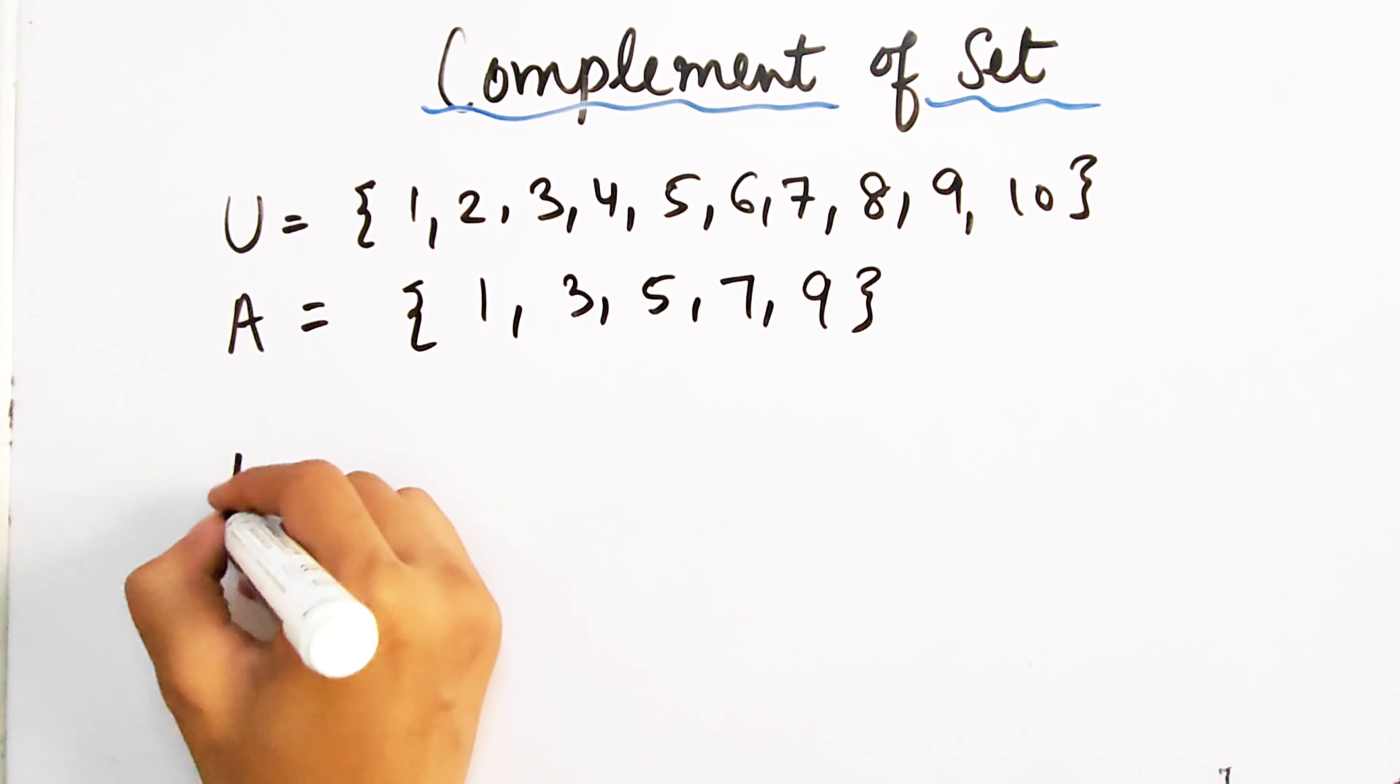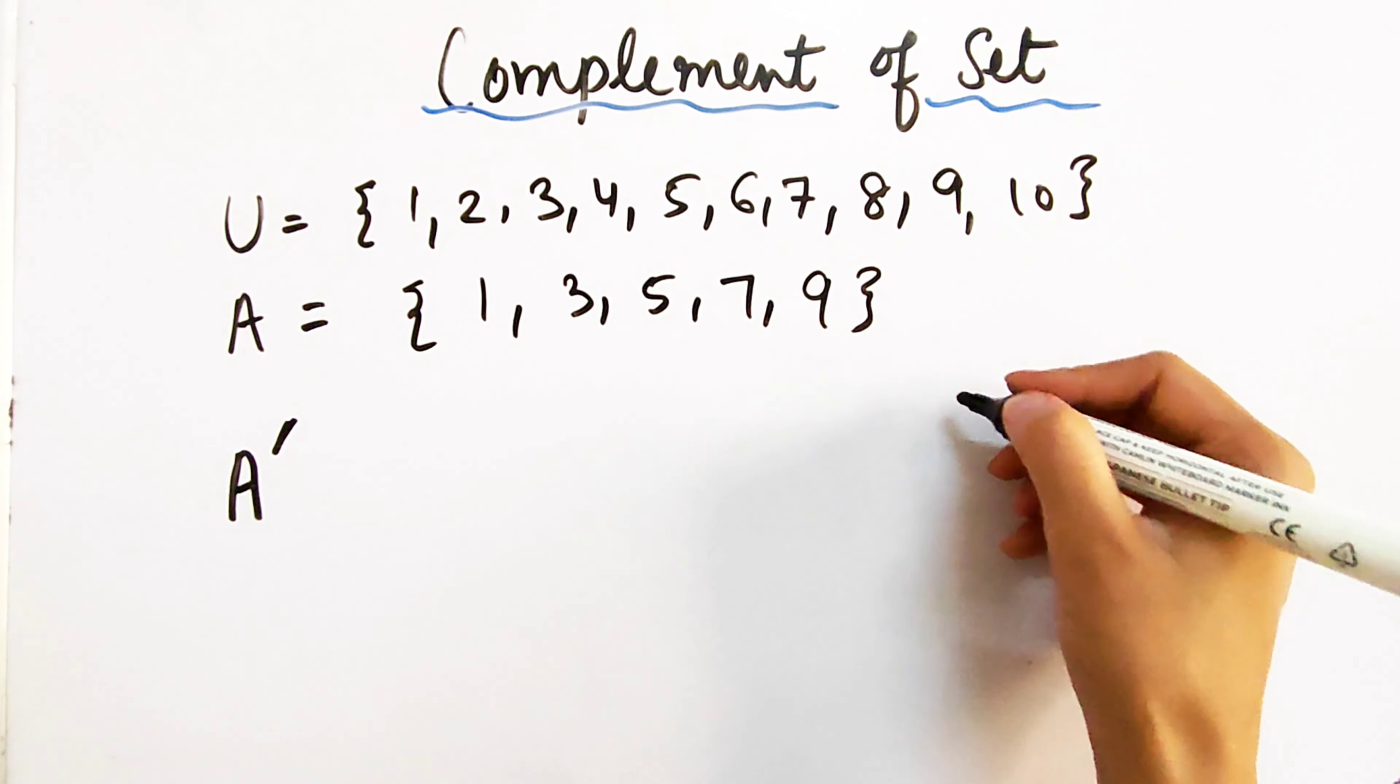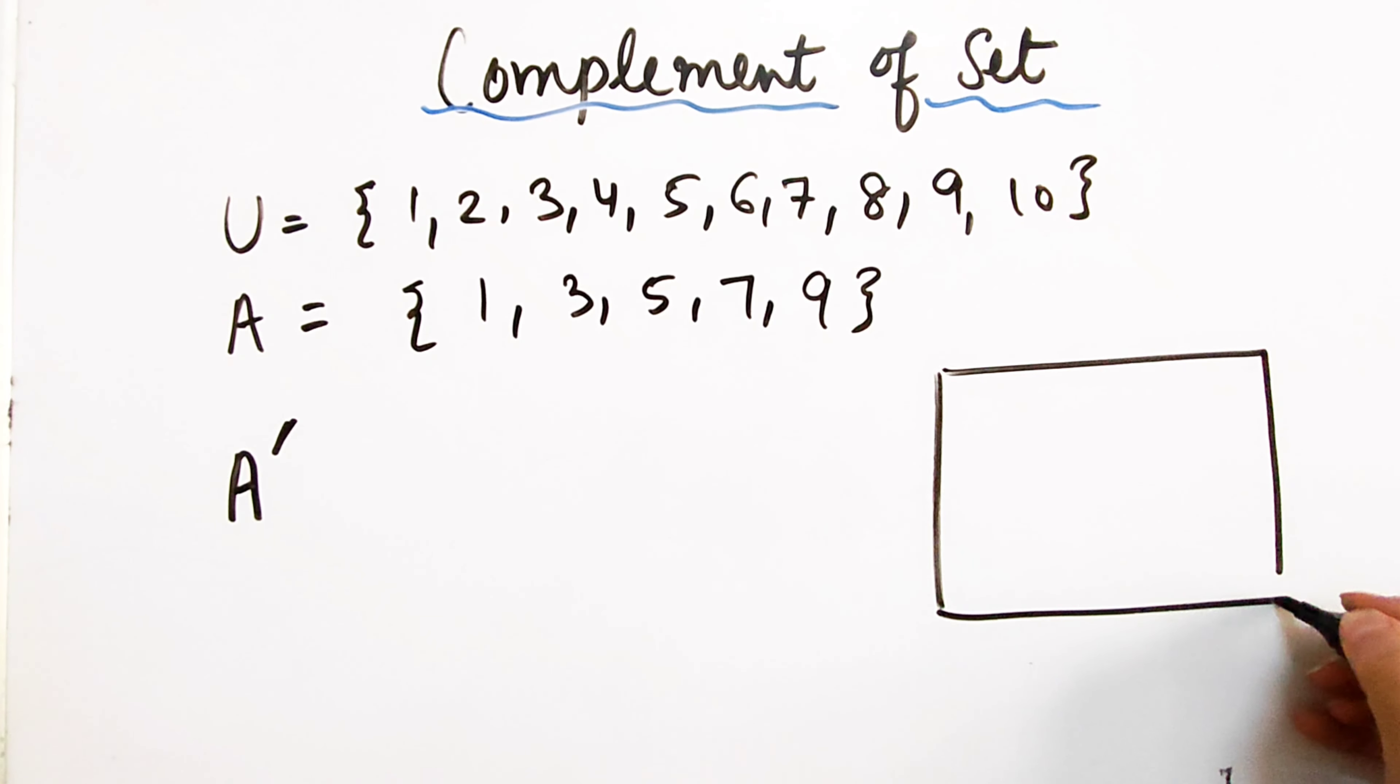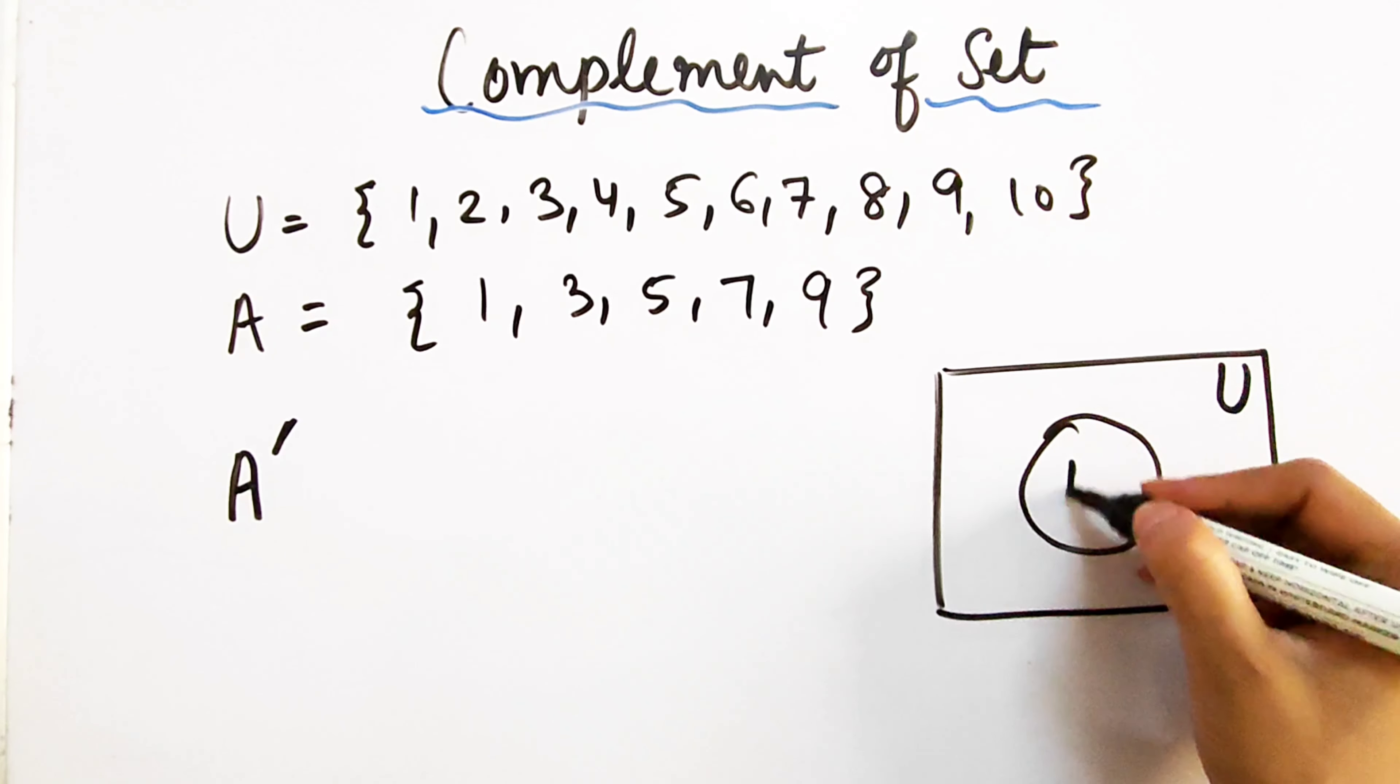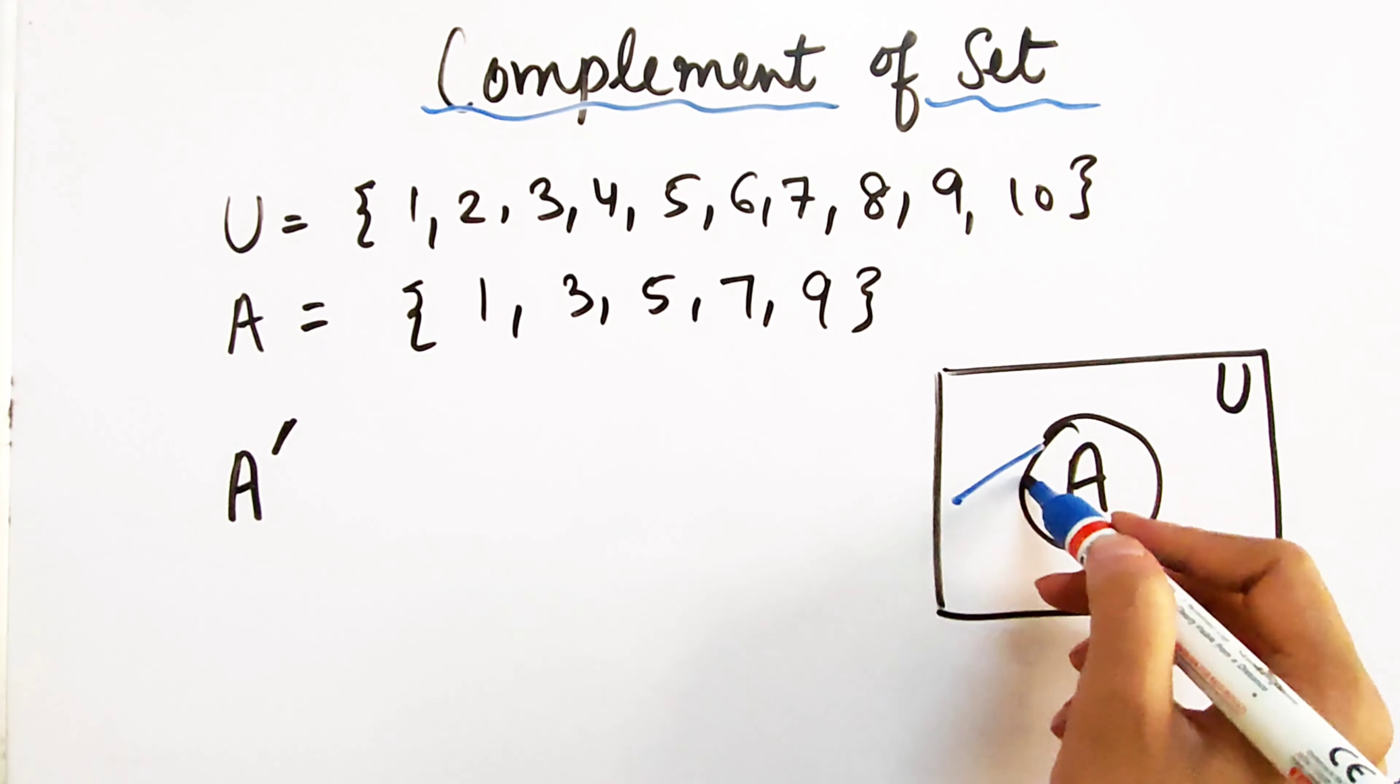Now, what does the complement mean? If I want to take an example of a set, we denote the complement as A'. What does it mean? All elements that come in the universal set, I do not come in A set.